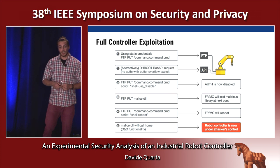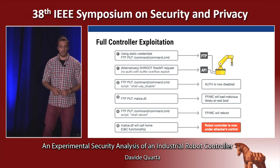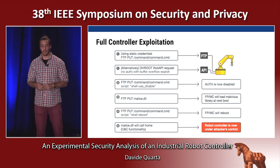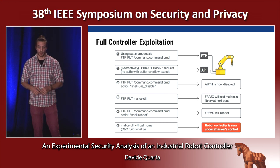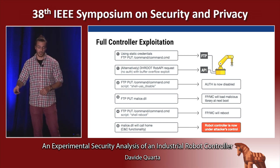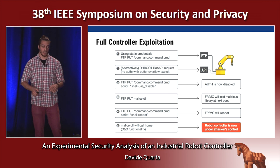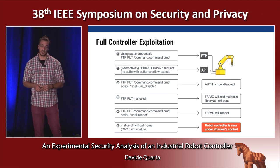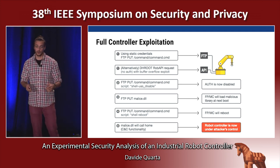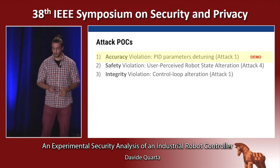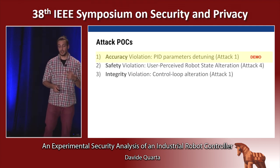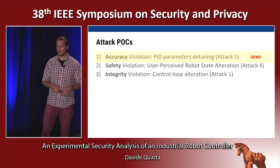We started by using either static credentials to compromise the robot remotely, or using the remote buffer overflow. We then disabled the user access controller so no permission checks are done on connections to the robot, and uploaded a malicious DLL that gets loaded on the teach pendant. We then triggered a reboot to ensure the controller is in a consistent state. At that point, the malicious DLL is loaded on the teach pendant with command-and-control functionality, and we use the FTP/web server on the main controller to remotely control both the controller and teach pendant.